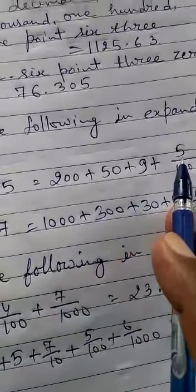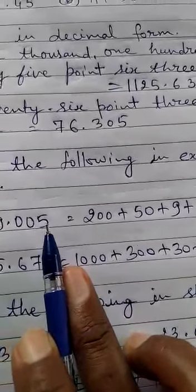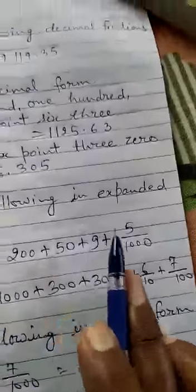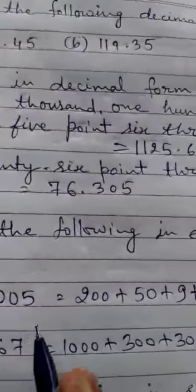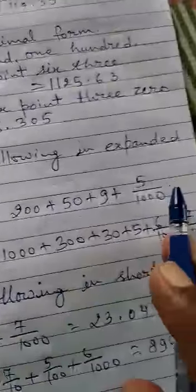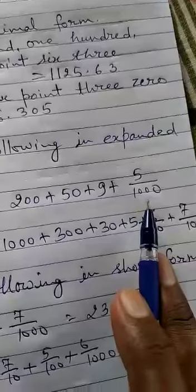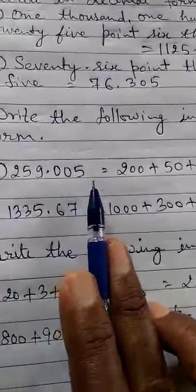Now you will expand the decimal parts - 0 tenths, 0 hundredths, and 5 thousandths. 0 tenths means 0/10 which becomes 0, and 0/100 becomes 0, so you don't need to write these. You will write 5/1000 only. So 200 plus 50 plus 9 plus 5/1000 equals 259.005.